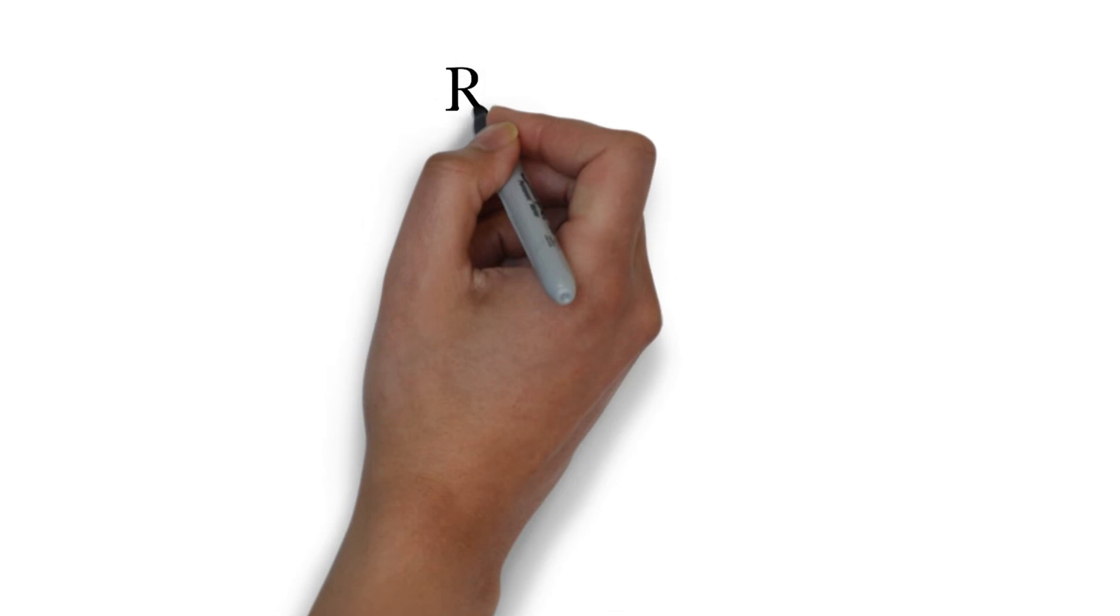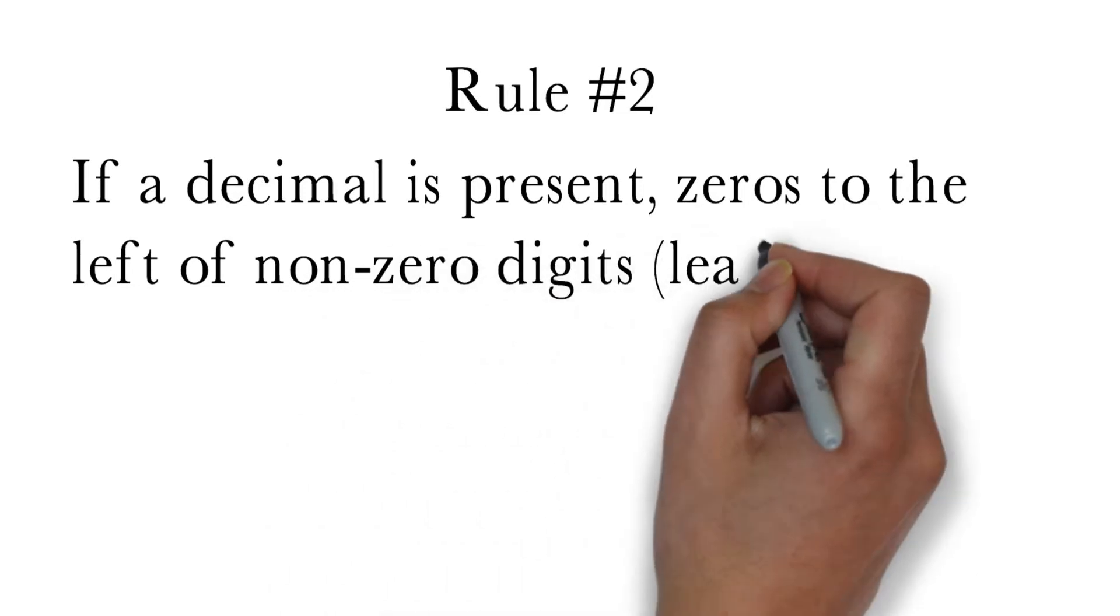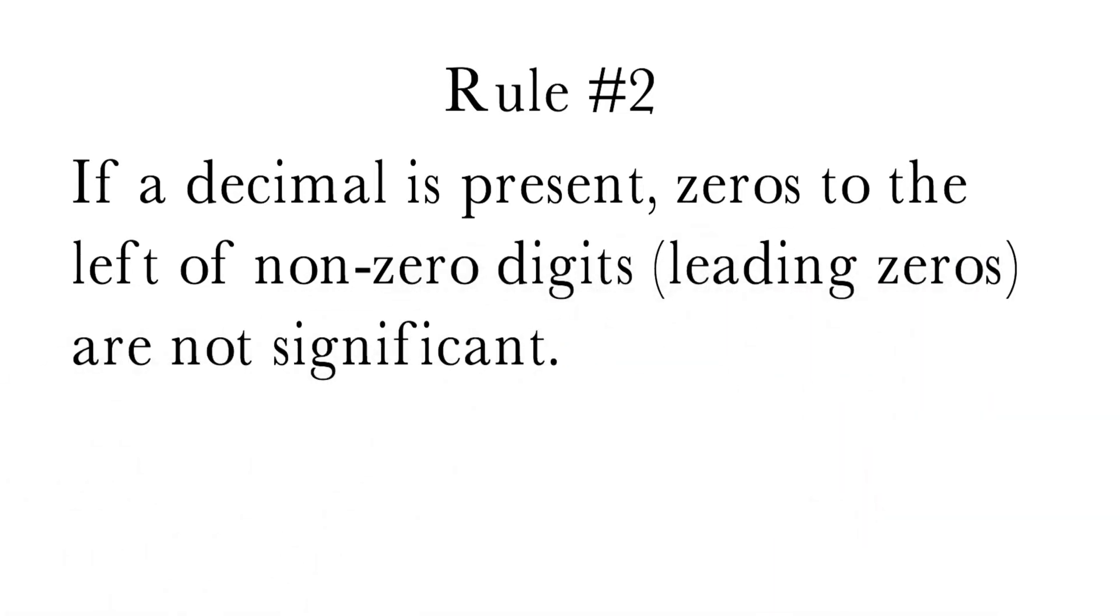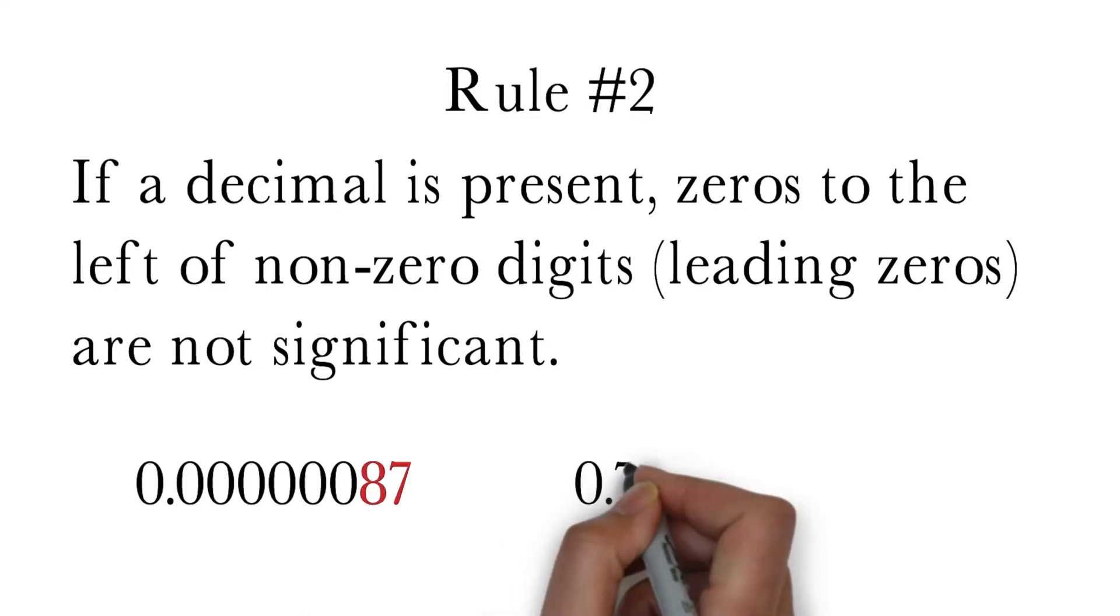The second rule of significant digits is if a decimal is present, zeros to the left of non-zero digits, also known as leading zeros, are not significant. For example, 0.000000087 has two significant digits, 0.765 has three significant digits, and 0.1 has one significant digit.